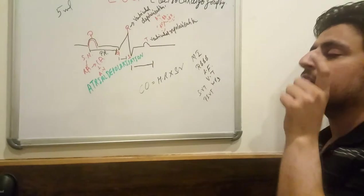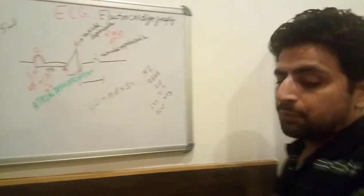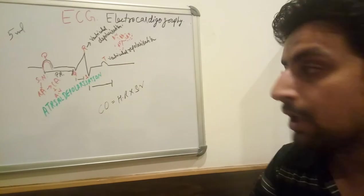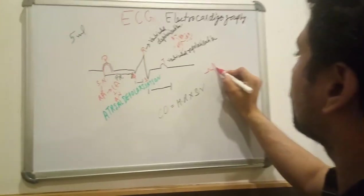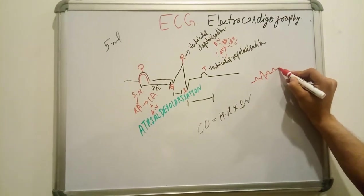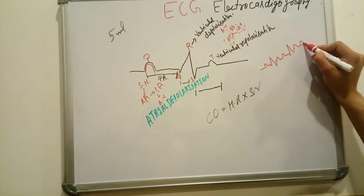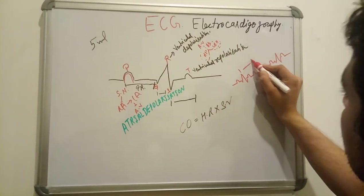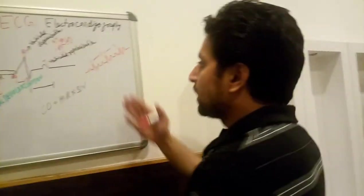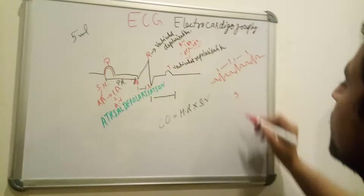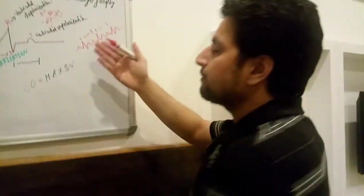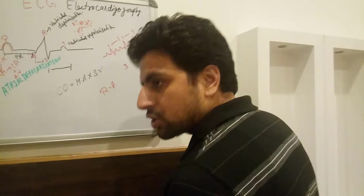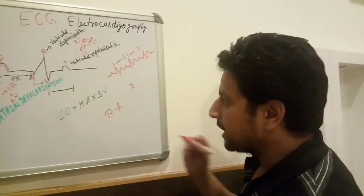I am going to explain in this video how to calculate firstly the heart rate, and then we will move on to cardiac output. To calculate heart rate, we look at the ECG and measure the R-R interval. If the R-R interval distance is consistent — for example, 3 large boxes in each interval — we can use that to calculate the heart rate.